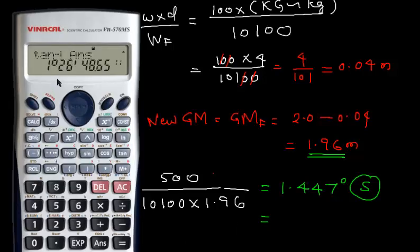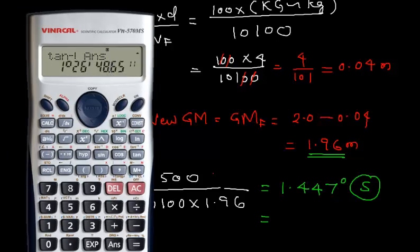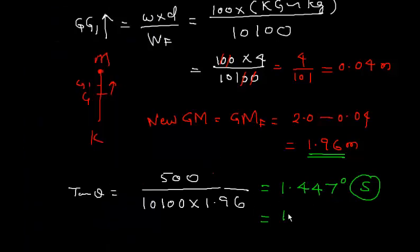We can also round off in degrees and minutes with the same example. So the answer is 1 degree 26 minutes and 48.67 seconds. Rounding off, 48 divided by 60 gives 0.8, so it is also correct to express this as 1 degree 26.8 minutes.